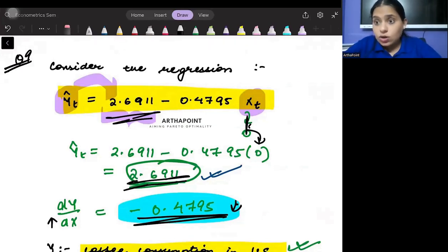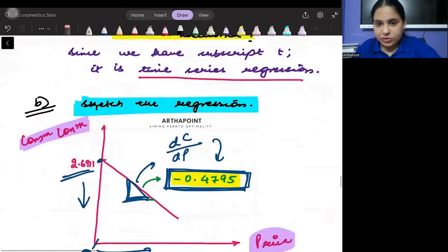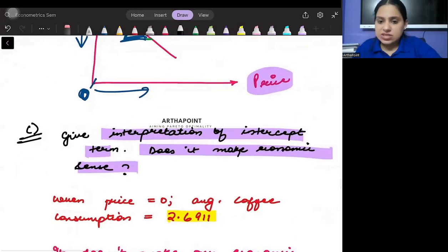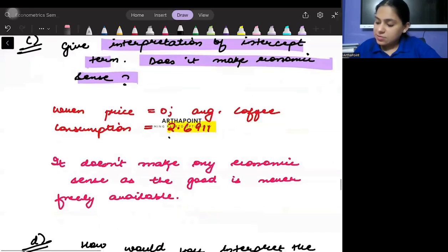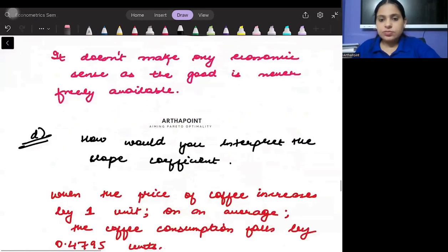Unless it's a bad good like pollution or COVID. If it is a good good, then when it is available free of cost, it will always lead to overconsumption. So there is no reason why people will only be demanding 2.69 units when price is 0. So of course, it does not make any economic sense. But according to econometrics, it's fine that this is the intercept, and it tells us average coffee consumption when the price of the good is 0.